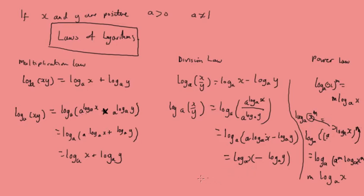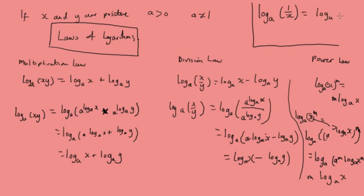From the power rule we can also write up here another useful identity: log base a of 1 over x is the same as log base a of x to the minus 1, which equals minus log base a of x. This identity is really going to be quite useful.